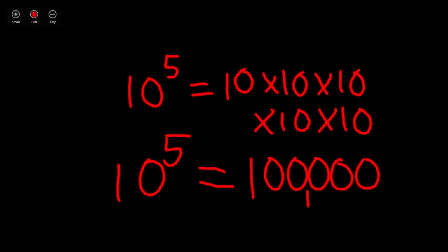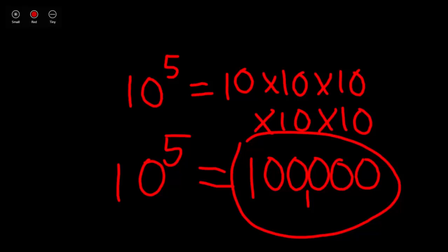This would also equal a 1 with 5 zeros. So, 10 to the power of 5 is really representing 100,000. 100,000 is a power of 10, represented in exponential form as 10 to the power of 5.